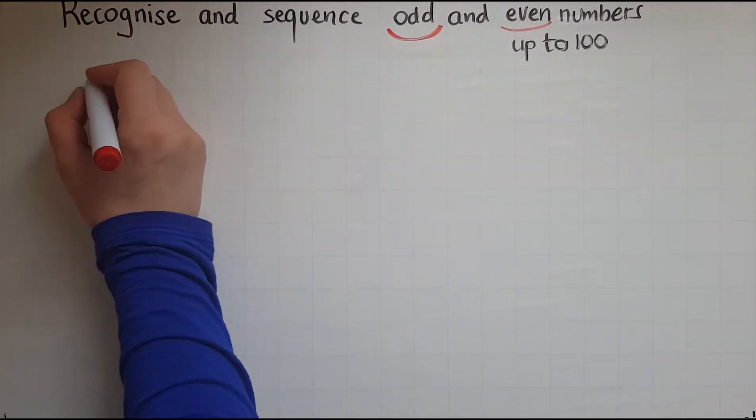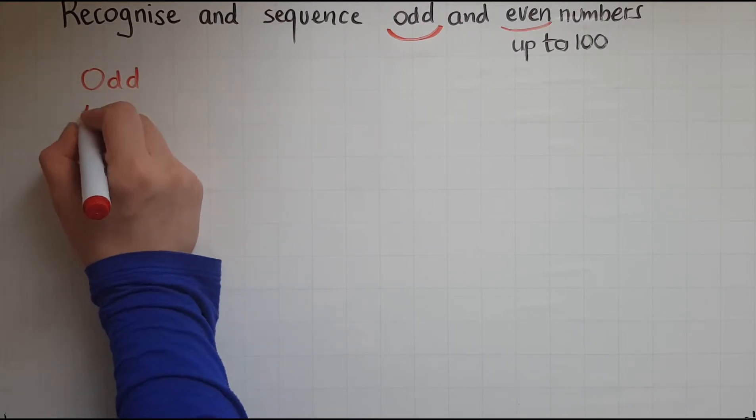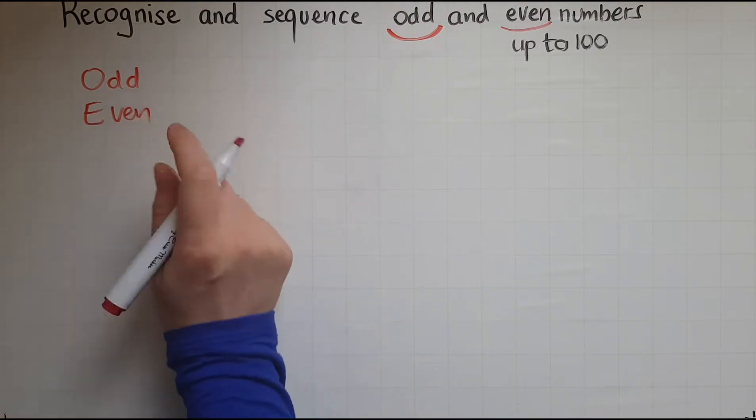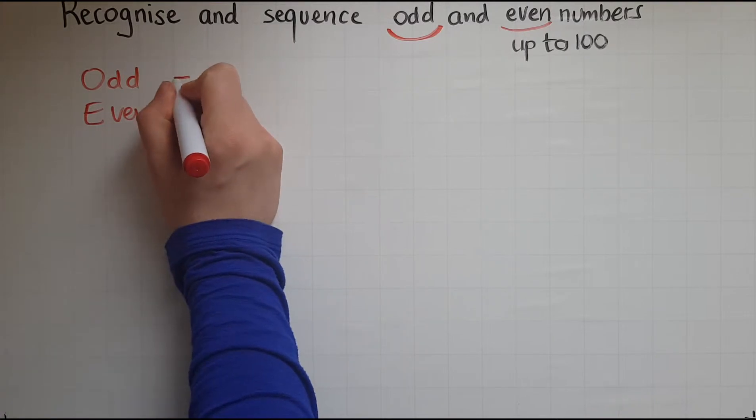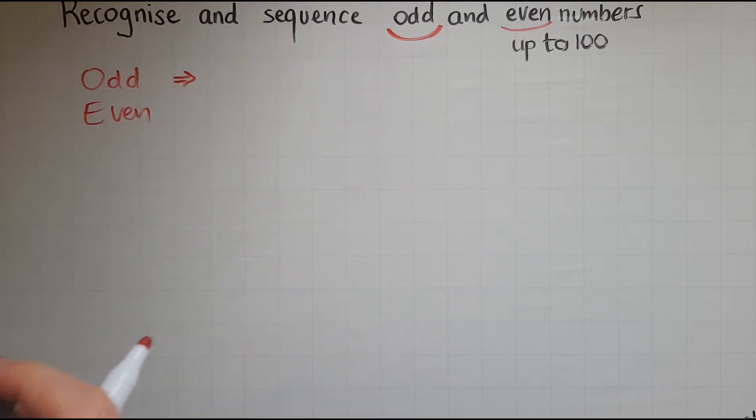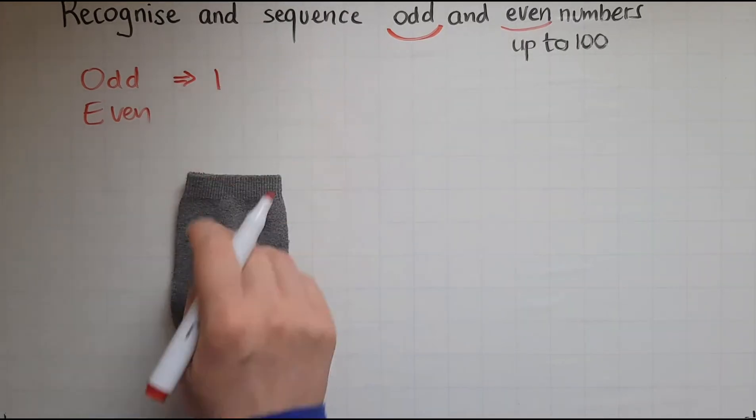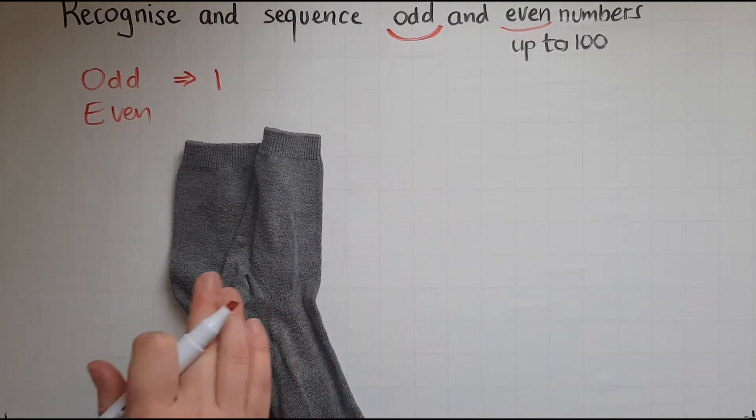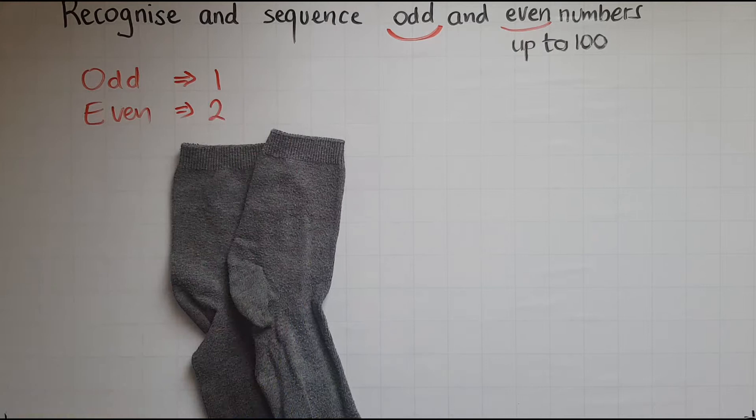So as we said, odd, even. So that's the odd socks and that's the pairs. So when we had just one, one was odd. But two socks made a pair, so there was nothing left. So two is an even number.